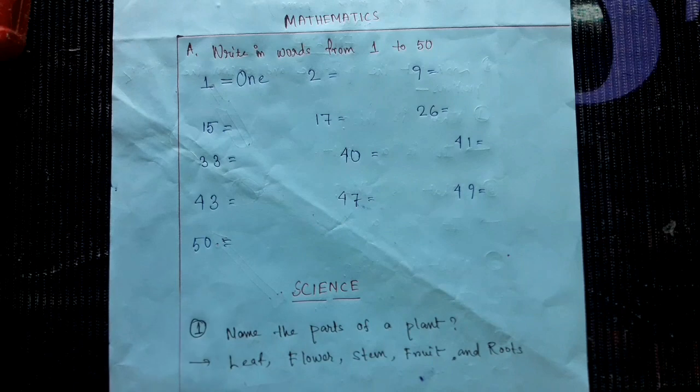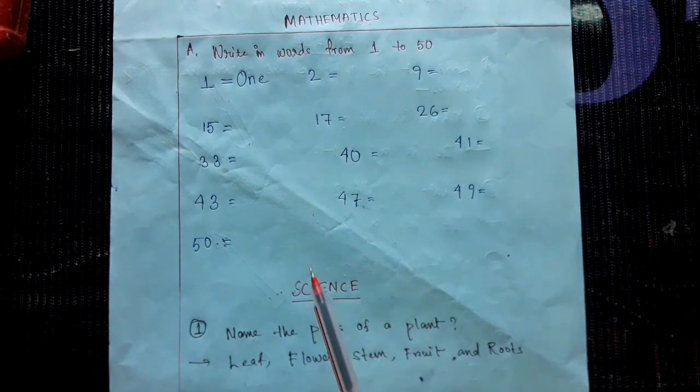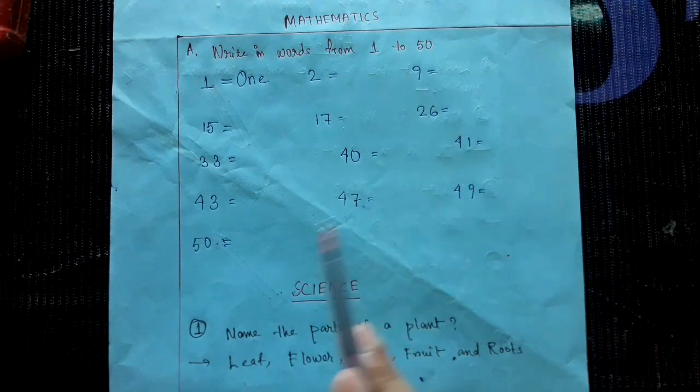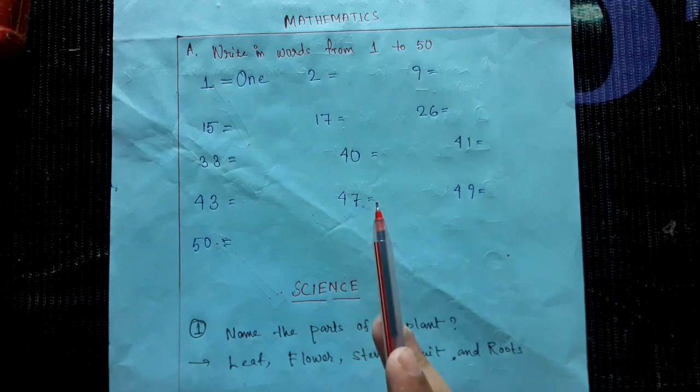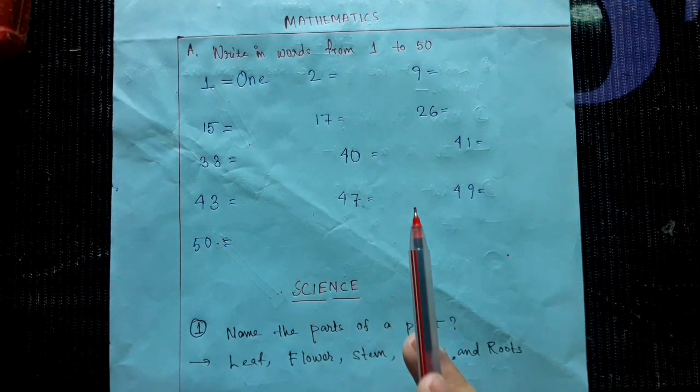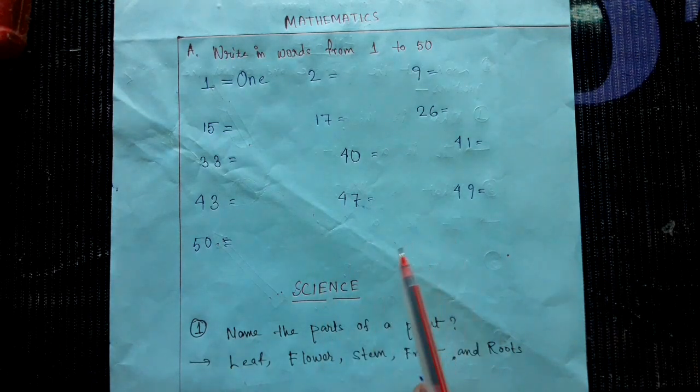And Mathematics. Write in words from 1 to 50. I have given some numbers here: 1, 2, 9, 15, 17, 40, 41. Some numbers are given. Now write serially from 1 to 50 for the child.